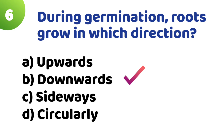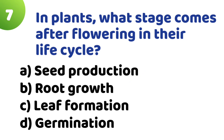Question 7: In plants, what stage comes after flowering in the life cycle? Option A: Seed production. Option B: Root growth. Option C: Leaf formation. Option D: Germination. The correct answer is Option A — Seed production.